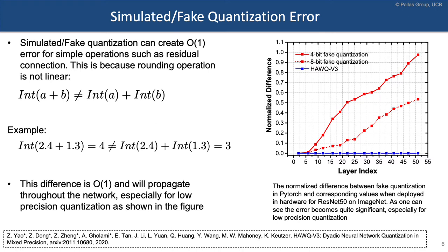This is because of the rounding operation. A rounding operation is not linear, so the rounding of A plus B is not the same as rounding A and then adding it to the rounded result of B. For example, 2.4 plus 1.3: if you sum these two numbers and then round, you get 4. But if you add the rounded values, you get 3. This is an order-one error.